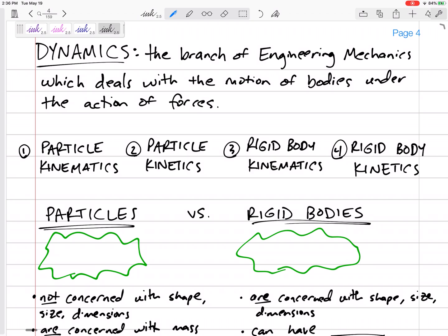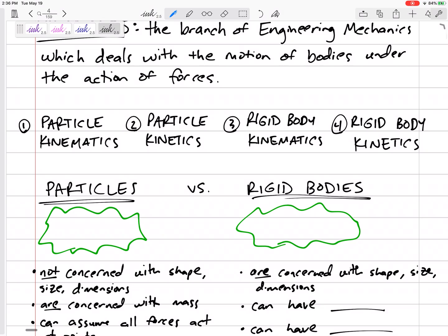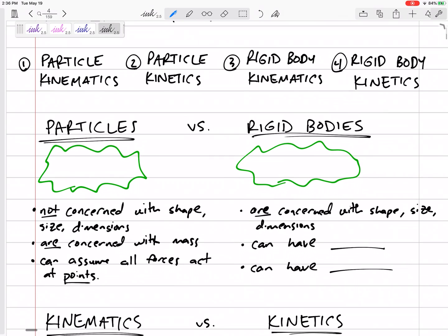If you look at the syllabus, this class breaks up into four distinct sections: particle kinematics, particle kinetics, rigid body kinematics, and rigid body kinetics. Let's define these. The first half of the semester we'll look at particles, the second half we'll look at rigid bodies. Particles are easier - they're just points, or we're going to assume that they are points.